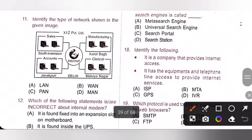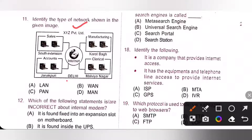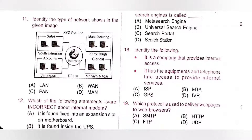Eleventh one: identify the type of network shown in the given image. Here, various branches of XYZ Private Limited are connected via internet, and all the branches are located in Delhi. So, this is called a Metropolitan Area Network (MAN), option D. When computers within a city are connected using a computer network, a MAN is formed.